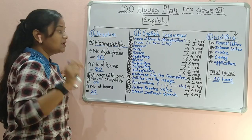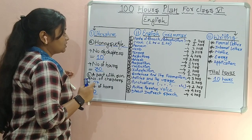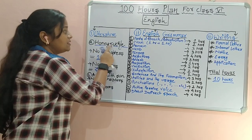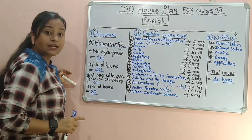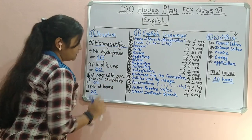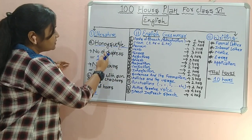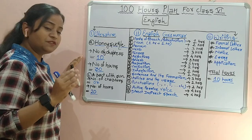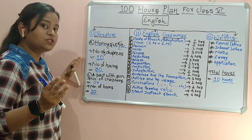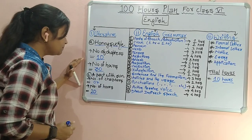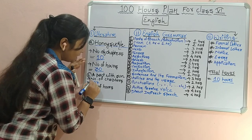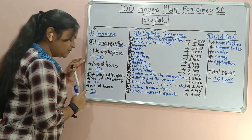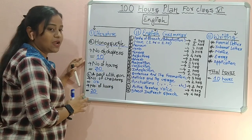In Literature, there are two parts — two books. The first book is Honeysuckle, and the second book is A Pact with Sun. Honeysuckle consists of 10 chapters, which will take approximately 30 hours. Then there are 7 chapters in A Pact with Sun, which will take 20 hours.